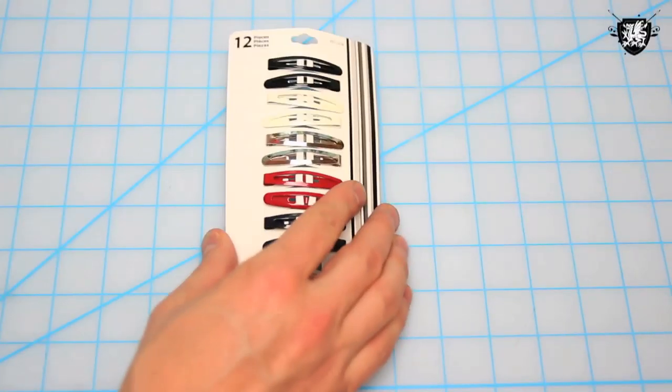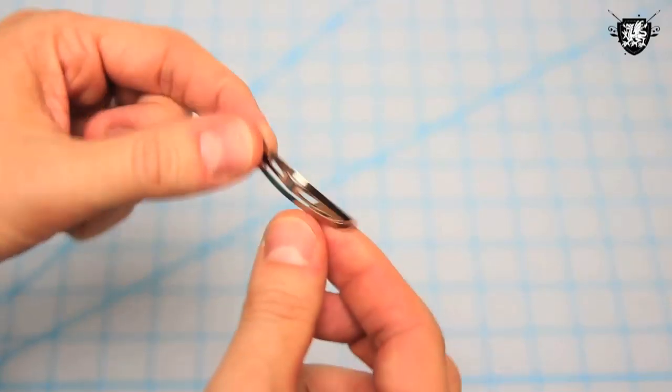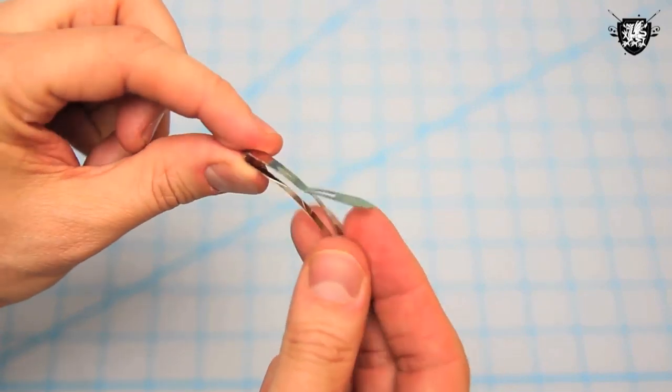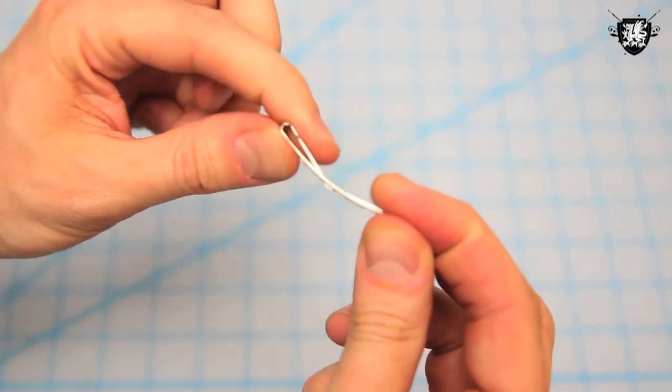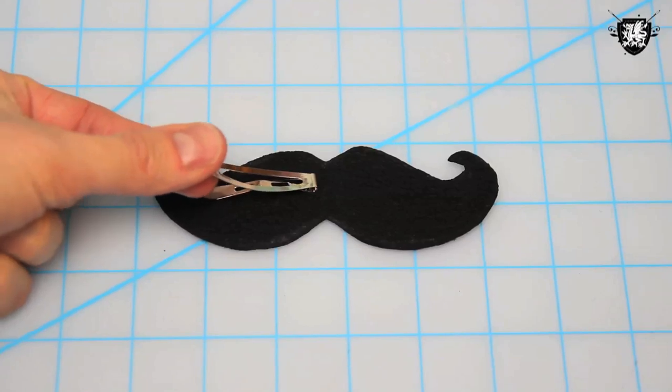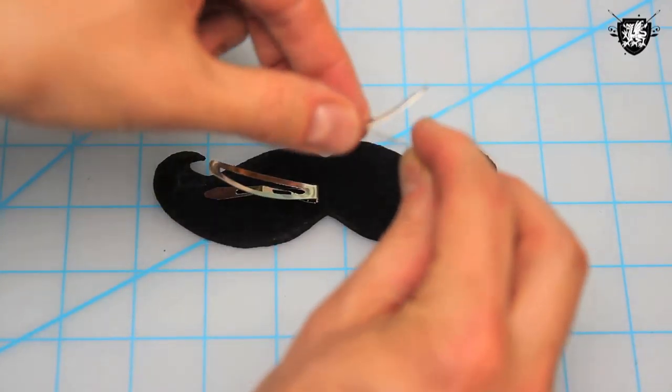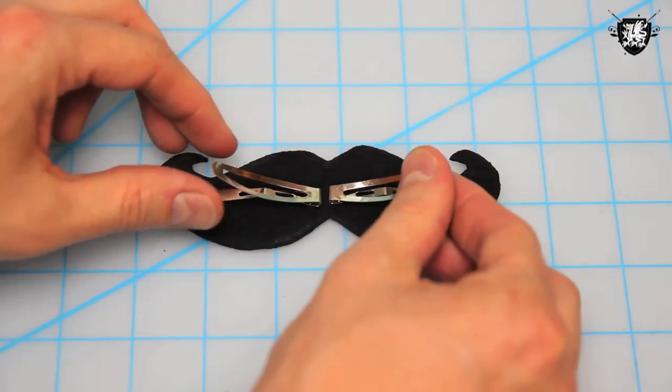Now grab your hair clips. I got these at the pharmacy for a buck. They're the kind that snap back and forth. Not sure if they have a fancier name than snappy hair clips, but this is what you want to get. Place two of them on the back of the mustache like so, with the little point thing down.